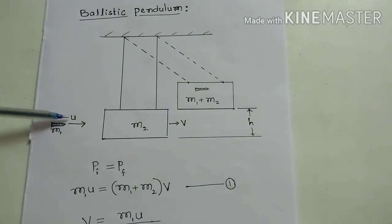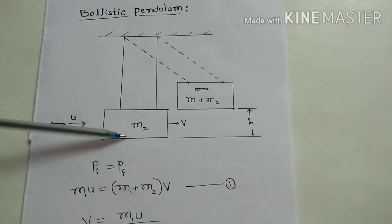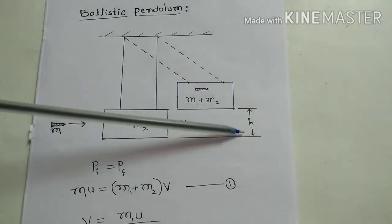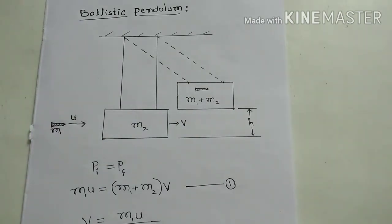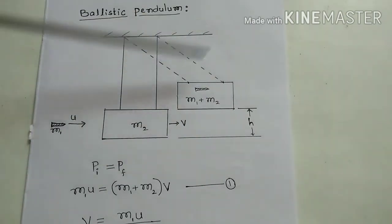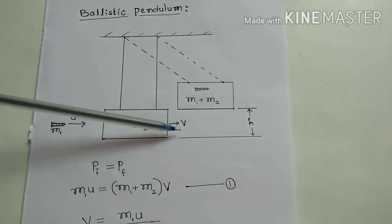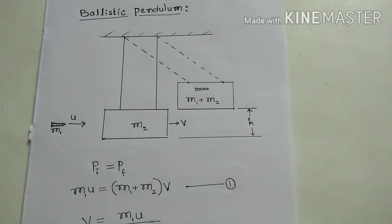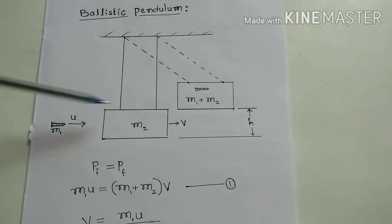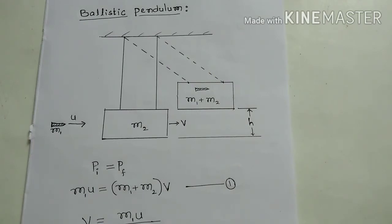The velocity of the bullet u is what we want to find. We know m1, we know m2, we calculate v, and we also measure h from the experiment. From these, we can calculate u. This complete setup — m2 block with m1 bullet together — is called the ballistic pendulum.